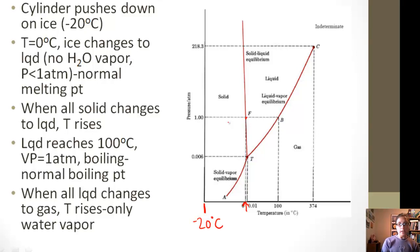Once all the solid has changed to a liquid, now the temperature is going to rise again. Once the liquid reaches 100 degrees Celsius, the vapor pressure is going to be at one atmosphere.